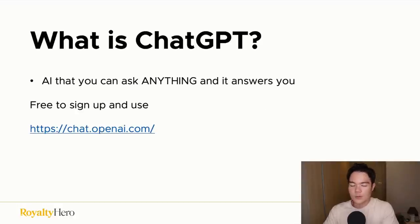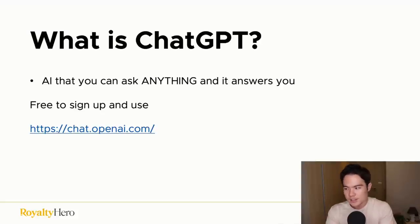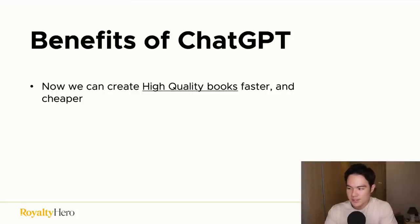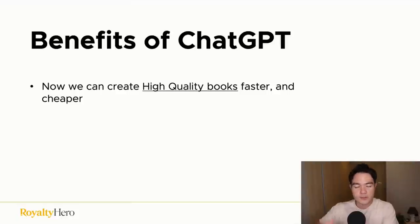Let's start with the basics. For those who don't know anything about ChatGPT or AI, it's been a hype the past couple of months. ChatGPT is an AI tool that you can ask anything and it answers it for you. It is free to sign up and use by just going to chat.openai.com. The benefits of using ChatGPT specifically for our Amazon KDP business is that now we can create high quality books faster and cheaper, because a lot of the tasks we normally would outsource to a freelancer we can now do ourselves.